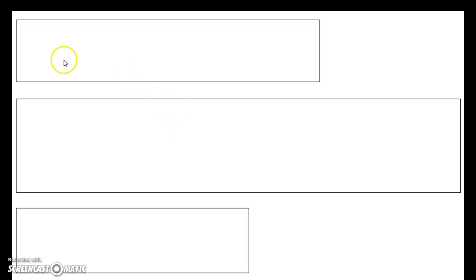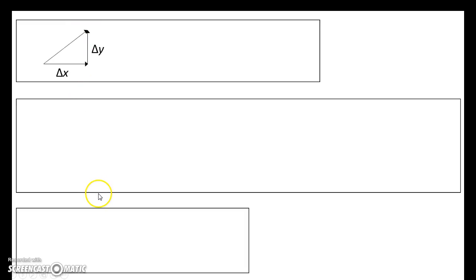Here's what we learned in the very beginning. Imagine a person walks to the east some amount delta x, and then they walk to the north some amount delta y. If we want to get the total displacement, we connect an arrow from the very beginning to the very end. It's two-dimensional, so we call that total displacement delta r total. The equation needs to show: add this vector tip to tail with this vector, and you get delta r total.